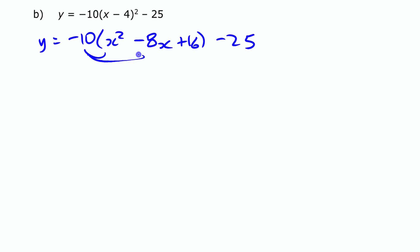We need to distribute that, multiply that out. This is going to give you negative 10 X squared plus 80 X minus 160. This negative in front here is going to change all the signs of everything in that bracket.